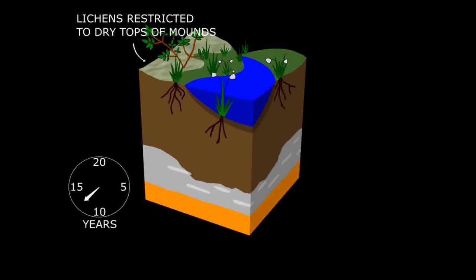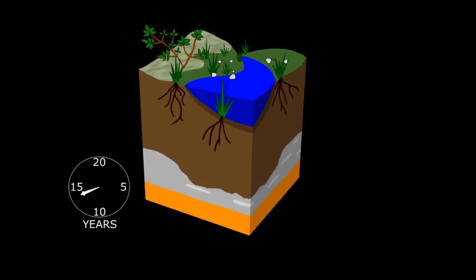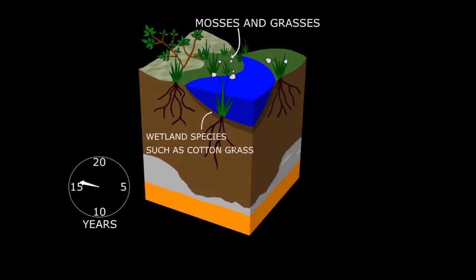In some instances, permafrost thaw and pond formation are very rapid following a collapse of the ground surface. New plants grow such as cotton grass at the edges of the ponds.